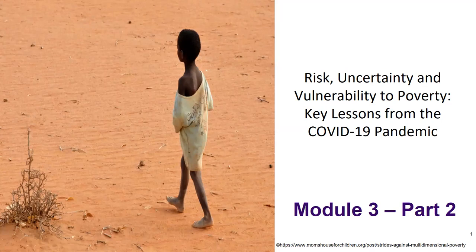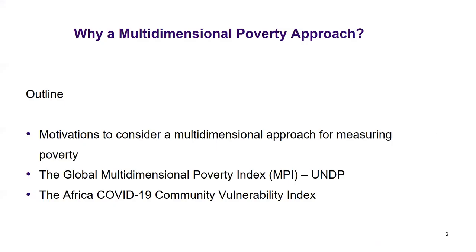This is the second part of Module 3, looking again at risk, uncertainty and vulnerability to poverty — key lessons from the COVID-19 pandemic. We will be looking more in terms of the multidimensional poverty approach. UNDP has a global multidimensional poverty index, and we will also talk specifically for the African continent: the Africa COVID-19 Community Vulnerability Index.